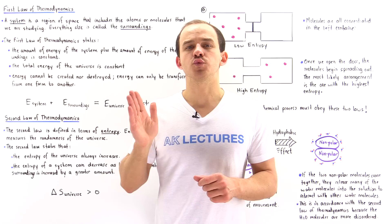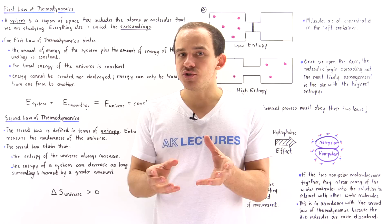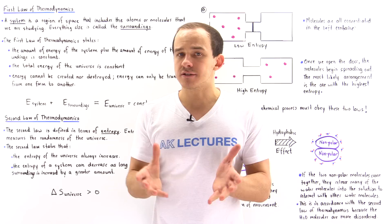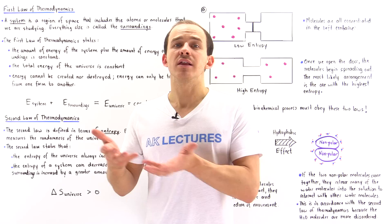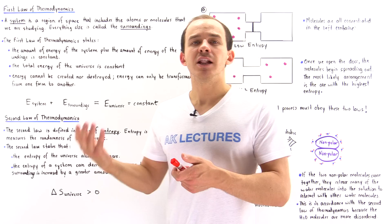The energy of the universe is always a constant value — it never decreases, it never increases, it always remains constant. What that means is energy is never destroyed and energy is never created, but energy can be transformed from one form to another. And this is true for physical as well as chemical reactions.